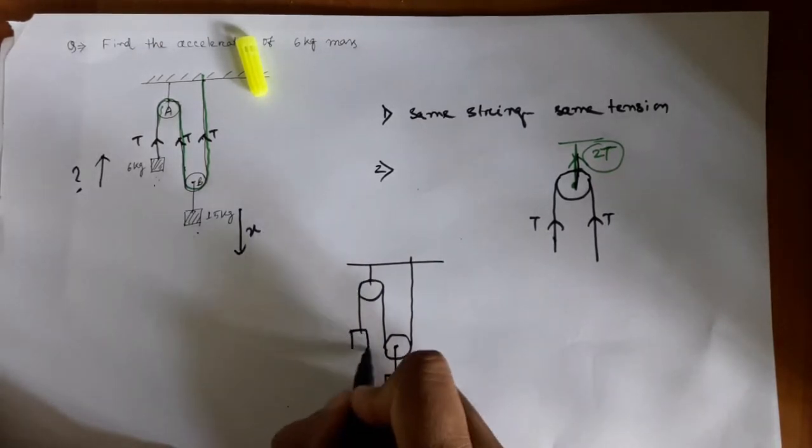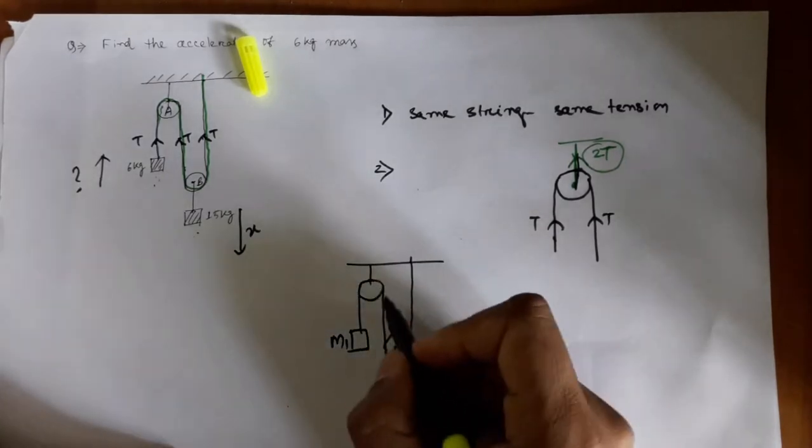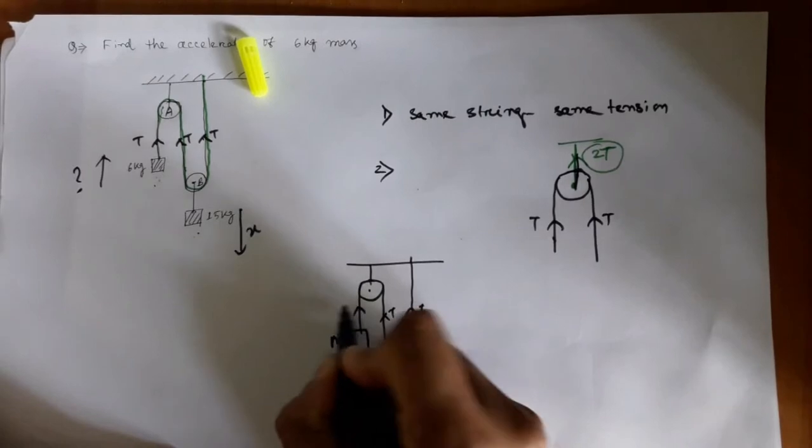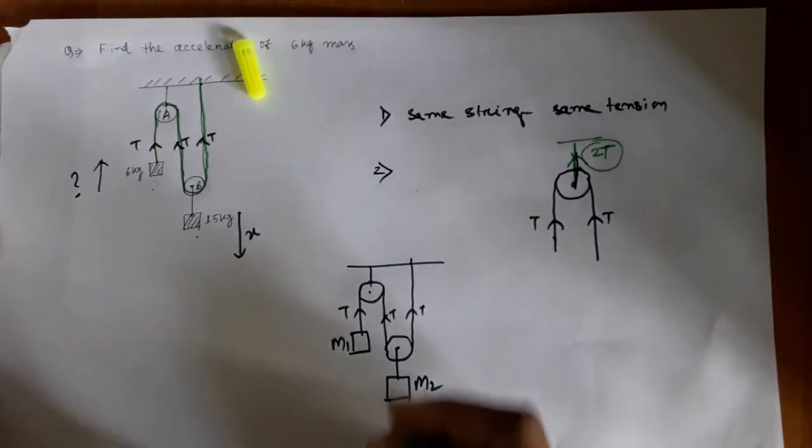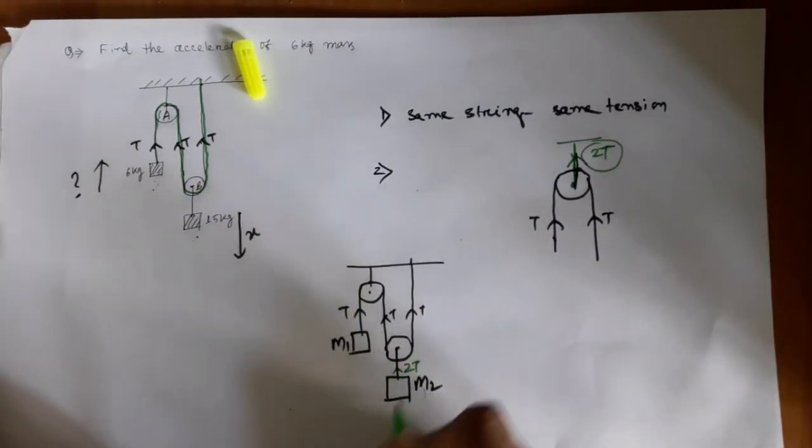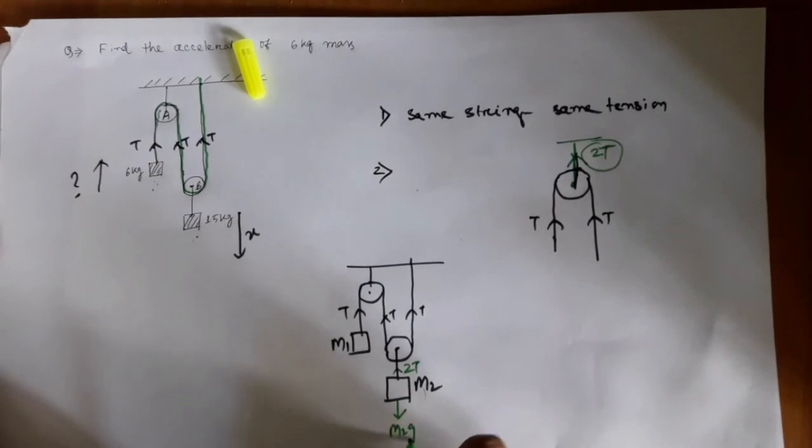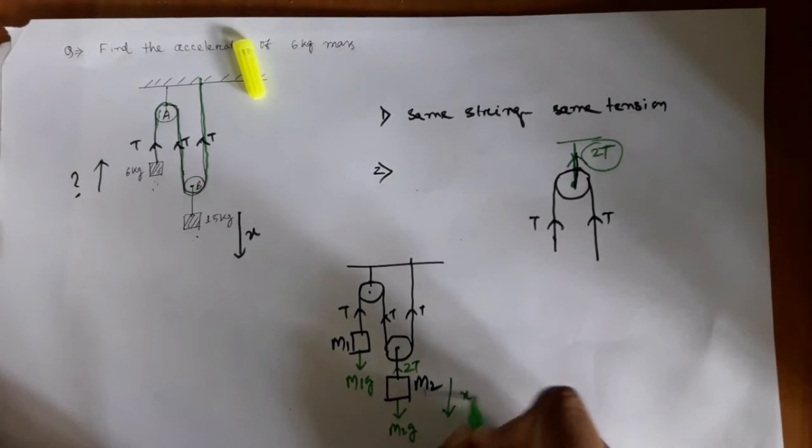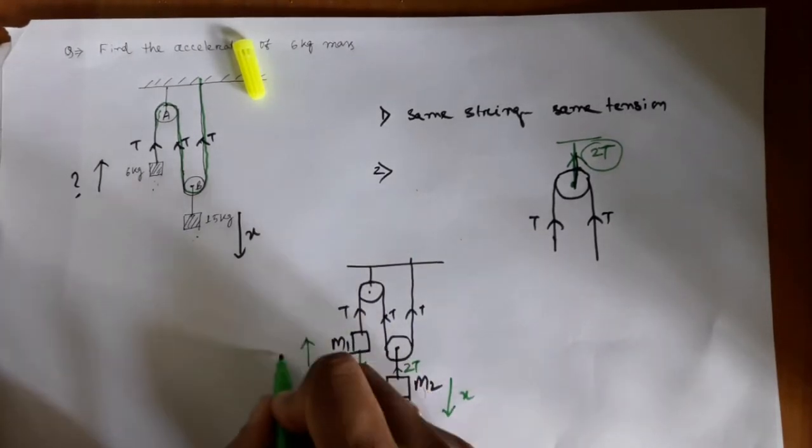So I am considering M1 and M2 for better calculation. So it is T, T, T, all the same. So if it is T and T, you have to keep that in mind: the tension in this string is twice T.